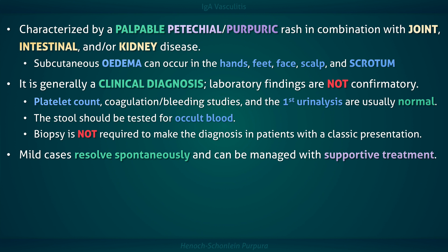Mild cases tend to resolve spontaneously and can be managed in the ambulatory setting with supportive treatment, such as rest, hydration, and pain relief. Joint and abdominal pain can be treated with acetaminophen or NSAIDs such as naproxen, if the patient does not have active gastrointestinal bleeding or renal insufficiency. NSAIDs alone do not seem to worsen the purpura or increase the risk of gastrointestinal complications in these patients.